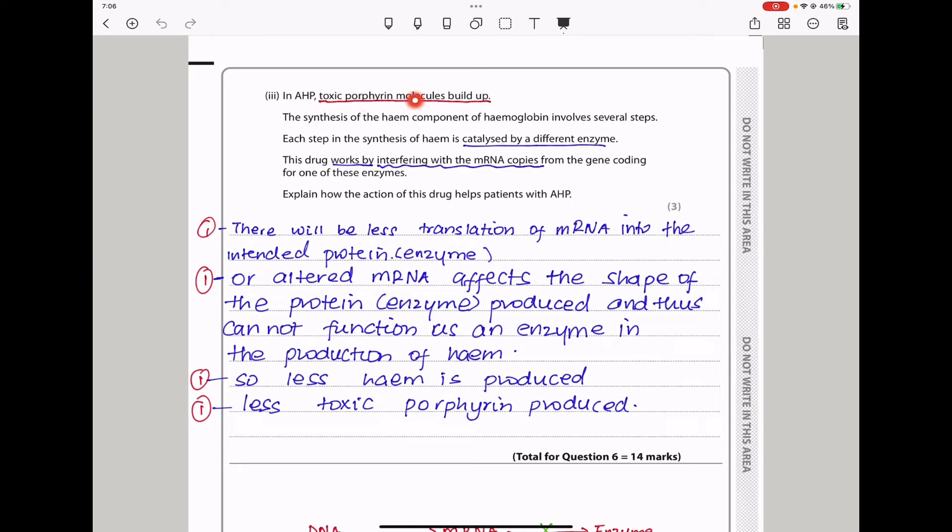In AHP, toxic porphyrin molecules build up. The synthesis of the heme component of hemoglobin involves several steps. Each step in the synthesis of heme is catalyzed by a different enzyme. This drug works by interfering with the messenger RNA copies from the gene coding for one of these enzymes. Explain how the action of this drug helps patients with AHP. There will be less translation of messenger RNA into the intended protein, which is the enzyme. Or the altered messenger RNA could affect the shape of the protein produced, and thus cannot function as an enzyme in the production of heme. And there will be less toxic porphyrin produced. This brings us to the end of question 6.